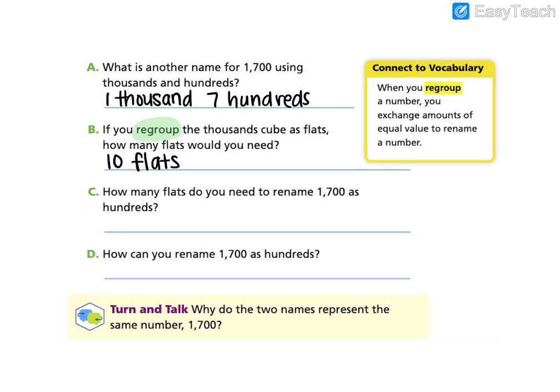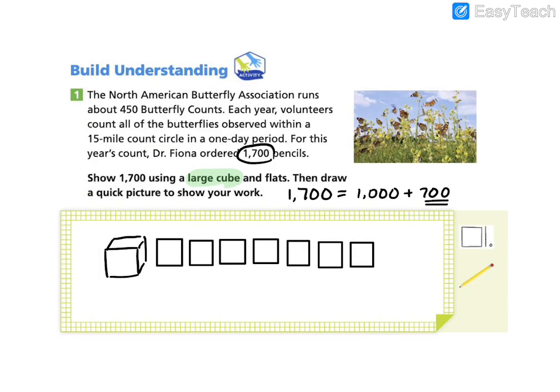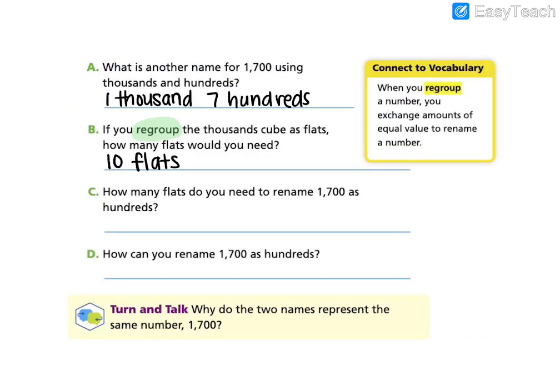So now letter C is asking us, how many flats do you need to rename 1,700 as hundreds? I'm going to pop back to my picture. If I know that this thousands cube is equal to 10 flats or 10 hundreds, how many total flats would I have? How many total hundreds? Well, I know I would have this 10 plus the 7 more. So how many flats would I need? I would need 17 flats to regroup and rename.